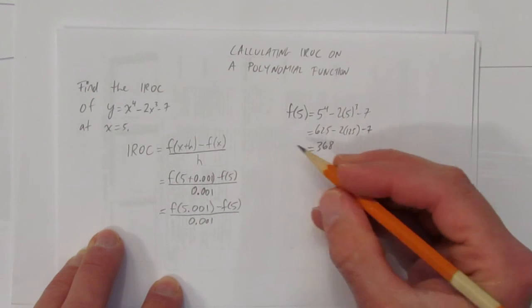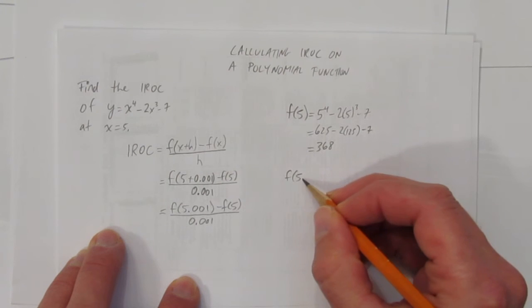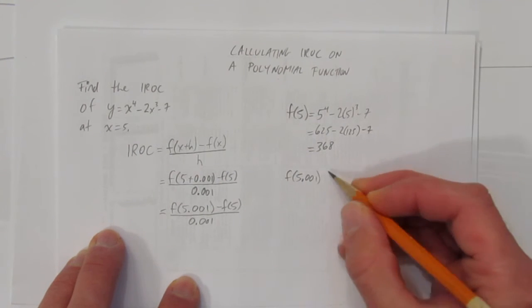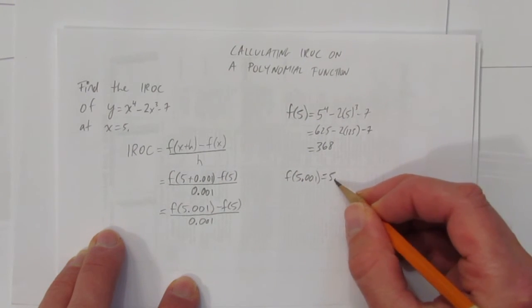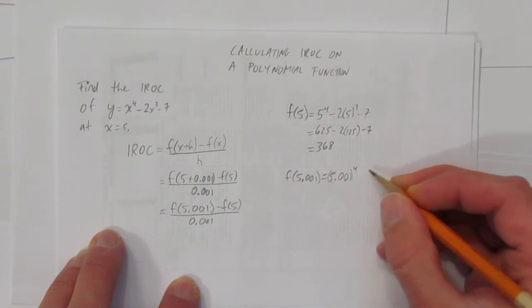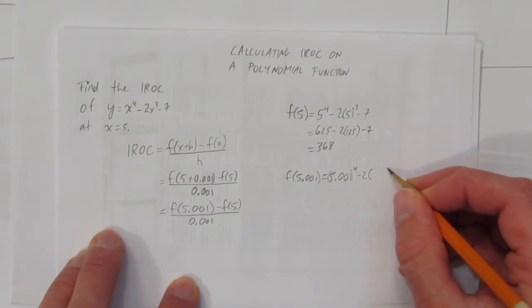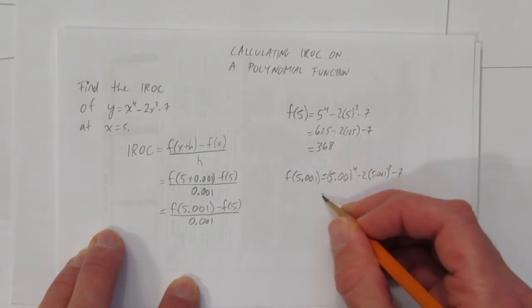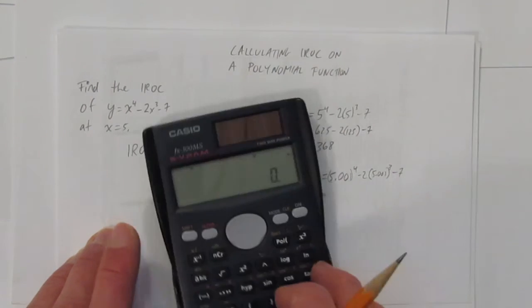So, we're going to do the same sort of work. We'll calculate f at 5.001, which is just 5.001 to the power of 4 minus 2 times 5.001 to the power of 3 minus 7. Let's use our trusty calculator.